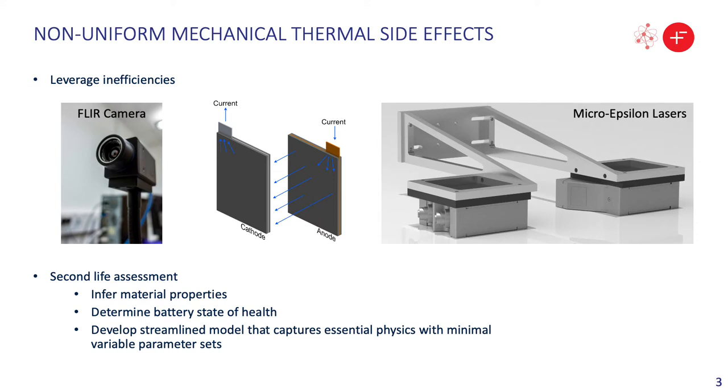These inefficiencies, however, give an extra pathway to probe mechanisms that are occurring inside from measurable effects on the outside. So we can measure temperatures using an IR camera, and we can measure dilation using laser profiles.